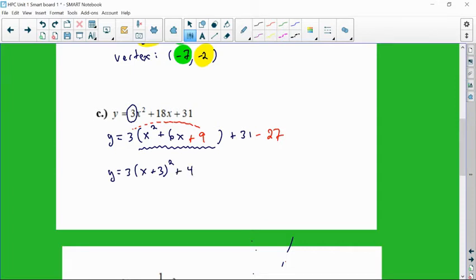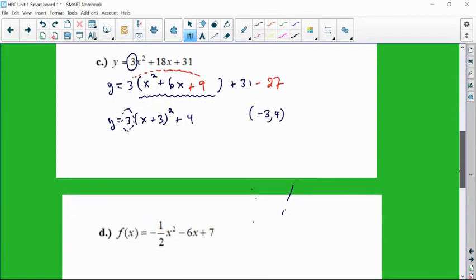So my vertex is negative 3, 4. And again, this coefficient of 3 just means that the rate of increase is 3 times greater, making our parabola 3 times skinnier. And I know skinnier is not really a mathematical term. Maybe we could talk about it being vertically stretched, horizontally compressed.